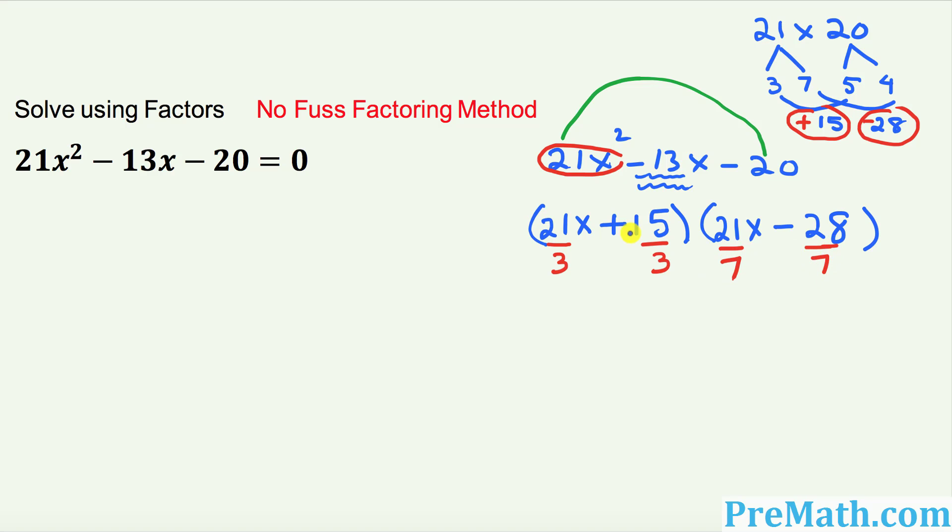Once you have done this thing, that's going to give you 21 divided by 3 is going to give you 7x plus 5 times 3x minus 4. And that is our complete factor for this quadratic polynomial.